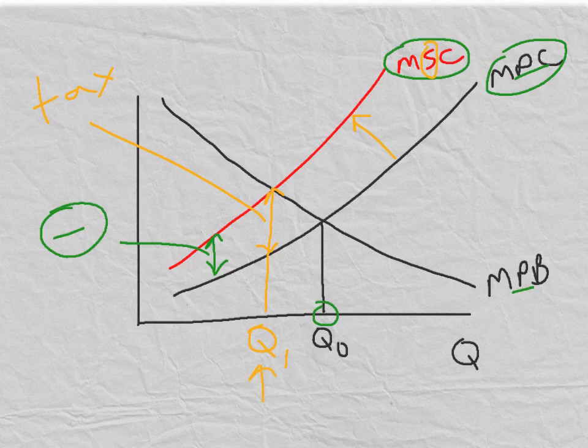This shows that by putting a tax on the product, we can increase the marginal private cost to make it reflect the marginal social cost and ensure that the equilibrium of the market is reached at